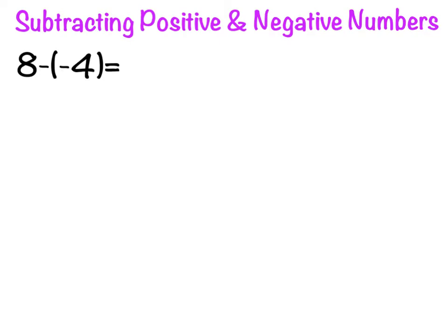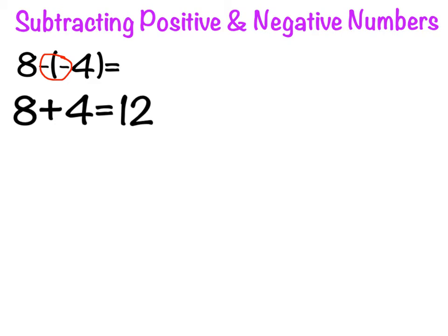Finally, let's talk about subtracting positive and negative numbers. Let's look at eight minus negative four. Whenever you have a situation where a negative number is being subtracted from a positive number, the fact that there are two minus signs right next to each other does something special. Essentially, these two minus signs come together to make an addition symbol. Your problem would be rewritten to look like this: eight plus four equals. We know from our basic addition facts that eight plus four equals twelve. So, eight minus negative four also equals twelve. This is how you subtract a negative number from a positive number.